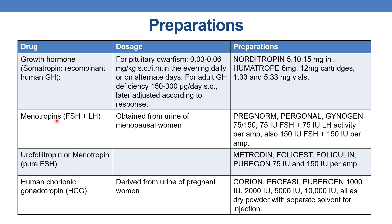The next drug is menotrophins — follicle stimulating hormone and luteinizing hormone obtained from the urine of menopausal women. Preparations are Pergonal, Pergonate, and Gynogen, available as 75 IU FSH plus 75 IU LH activity per ampoule, and also 150 IU FSH plus 150 IU LH per ampoule.